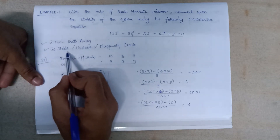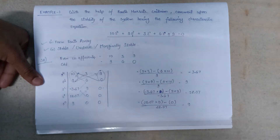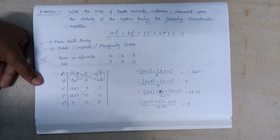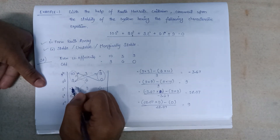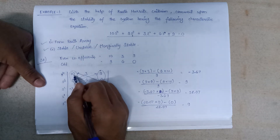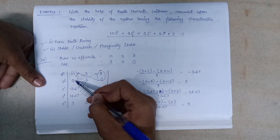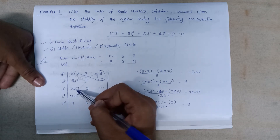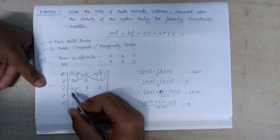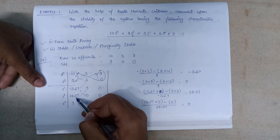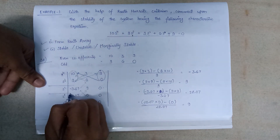Moving to the second part — checking stability. We notice how many sign changes are in the first column. 10 is positive, 9 is positive: no sign change. 9 is positive and minus 3.67 is negative: one sign change. Minus 3.67 is negative and 28.07 is positive: another sign change.